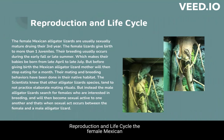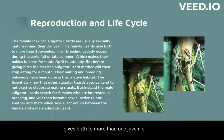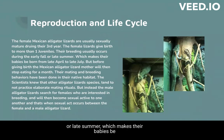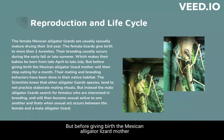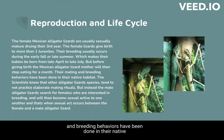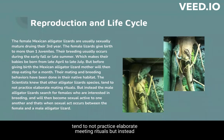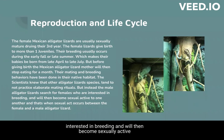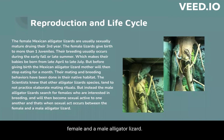Reproduction and life cycle. The female Mexican alligator lizard are usually sexually mature during their third year. The female lizard gives birth to more than one juvenile. Their breeding usually occurs during the early fall or late summer, which makes their babies be born from late April to late July. But before giving birth, the mother will stop eating for a month. Their mating and breeding behaviors have been done in their native habitat. Scientists knew that other alligator lizard species tend to not practice elaborate mating rituals, but instead the male alligator lizard searches for females who are interested in breeding and will then become sexually active with one another, and that's when sexual acts occur between a female and a male alligator lizard.